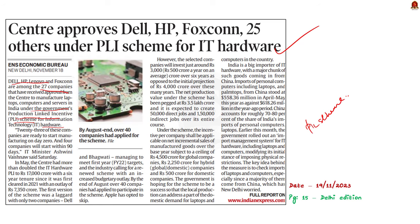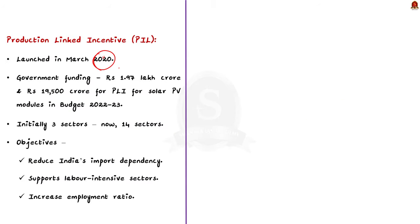The PLI scheme was launched in March 2022 to scale up domestic manufacturing capability, with higher import substitution and employment generation. The government set aside nearly ₹1.97 lakh crore rupees for the PLI scheme across various sectors, with an additional ₹19,500 crore for PLI for solar PV modules in Budget 2022-23. The scheme initially targeted three industries: mobile and allied component manufacturing, electrical component manufacturing, and medical devices. Currently, nearly 14 sectors are supported under the PLI scheme.